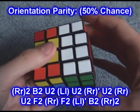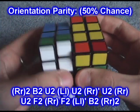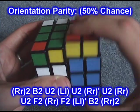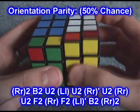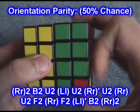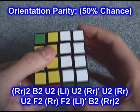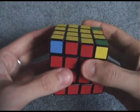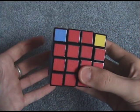R2, B2, U2, L, U2, R prime, U2, R, U2, F2, R, F2, L prime, B2, R2. So that's, I don't know, it's really long, you're going to have to learn it.